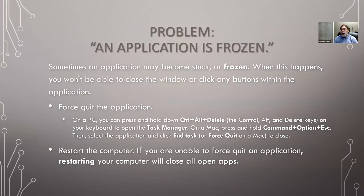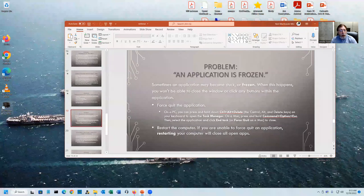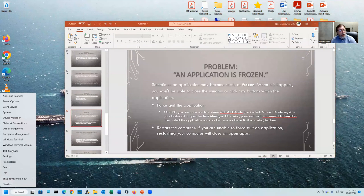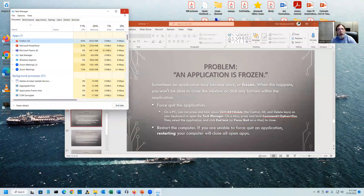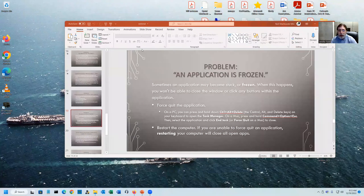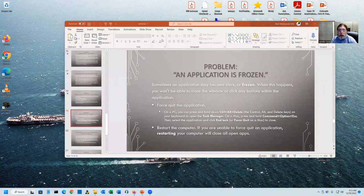If an application or program becomes stuck or frozen — say I've got a browser open and it won't let me close the window — you can force-quit the application by hitting Ctrl+Alt+Delete and selecting Task Manager from that menu. Or on a Windows 11 machine, right-click on the Windows icon and select Task Manager. Find the process that's hung, select it, and select End Task. This is also a good way of getting rid of scareware — if you get a fake antivirus popup you can't close, you can close your browser windows without rebooting.